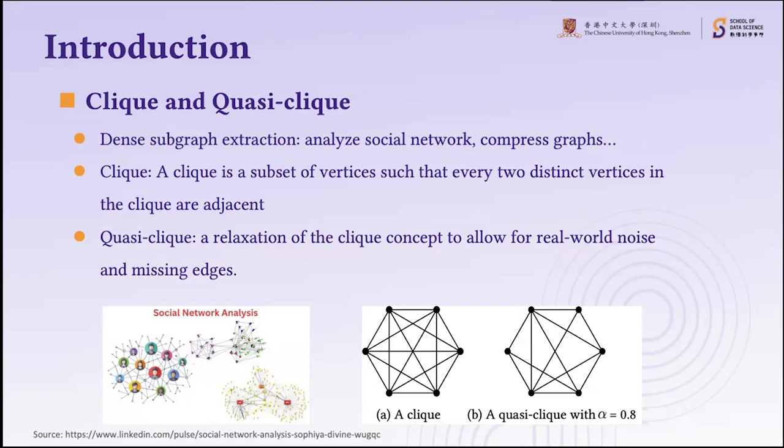A clique is a subset of vertices such that every two distinct vertices are adjacent. While conceptually simple, cliques are often unrealistic for noisy, incomplete, real-world data. This has motivated the development of various dense subgraph formulations in the literature, and quasi-cliques are a relaxation of the clique concept to allow for real-world noise and missing edges.